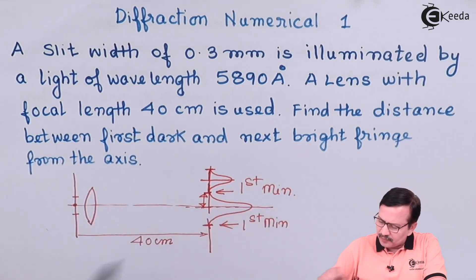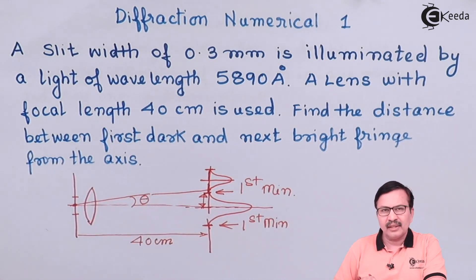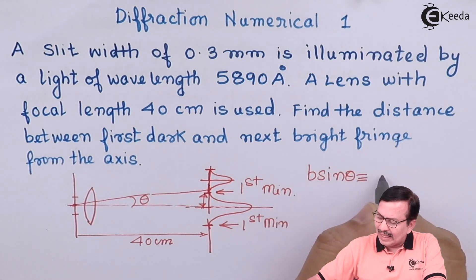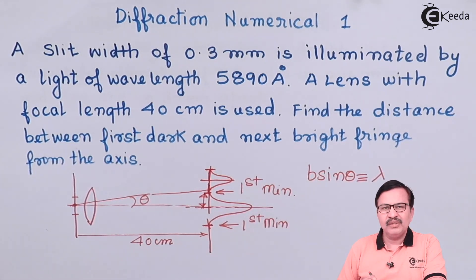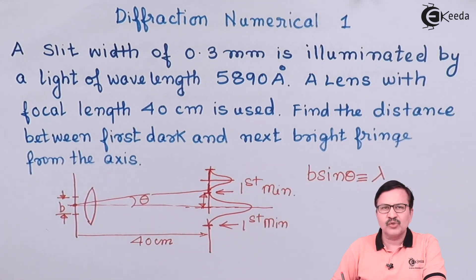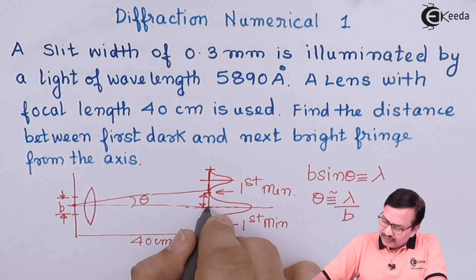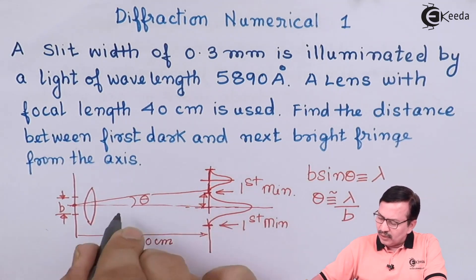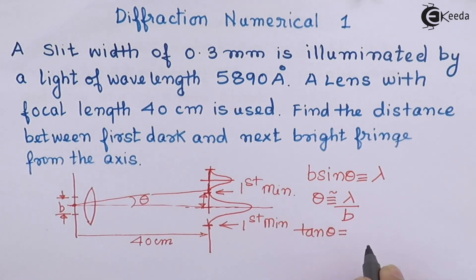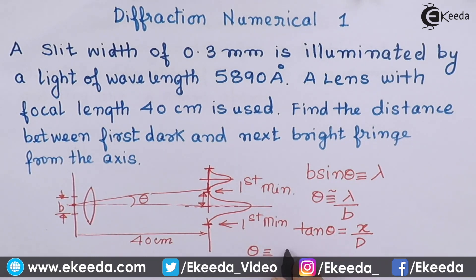Let us draw this line over here and a line out over here. This angle is theta. We now have for the first minima the condition: b sin θ = nλ, which simply equals 1 × λ. So b sin θ = λ, where b is the width of the slit. Since theta is very small, theta is approximately equal to λ/b.